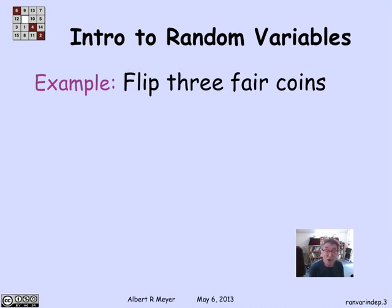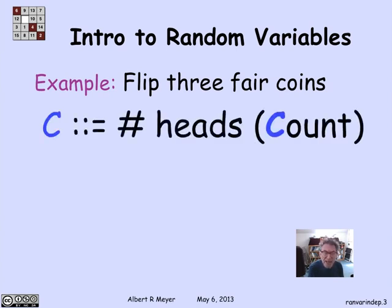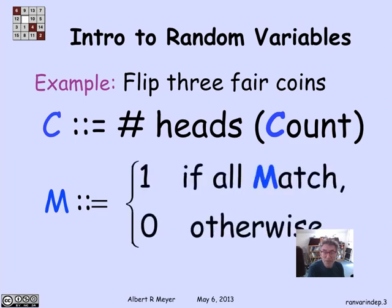Let's look at the example of three fair coins. Each coin has probability one-half of heads and one-half of tails. I'm going to flip all three, assuming they're distinguishable: a first, second, and third coin — or equivalently, flipping the same coin three times. The number of heads is a random variable taking values from 0 to 3. Another random variable is a 0,1-valued variable m that signals 1 if all three coins match, and 0 if they don't.